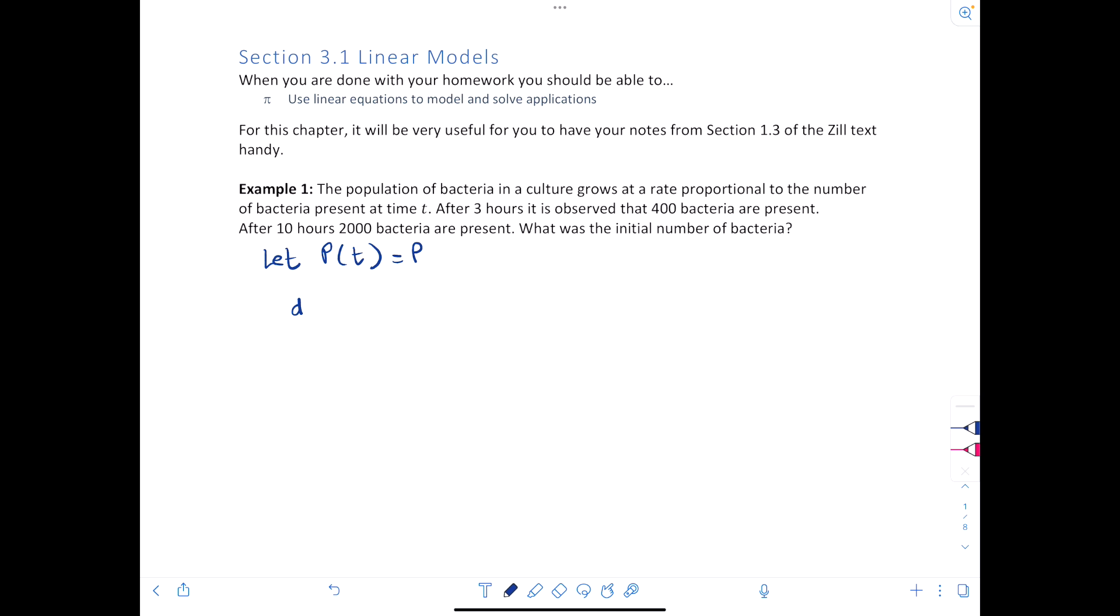If we let P at t equal to P, that's population at time t, we've been given that the derivative with respect to t of P is equal to some constant times the amount of bacteria present at time t, so we'll just say P. We could rewrite this as dP/dt plus negative k times P equals 0.